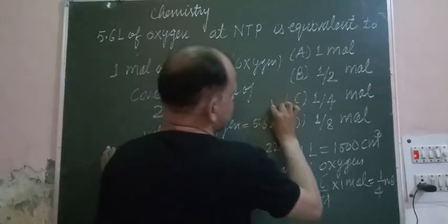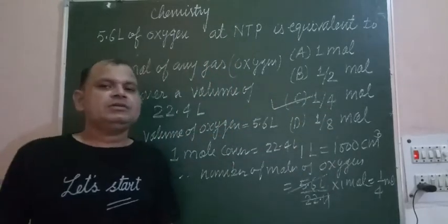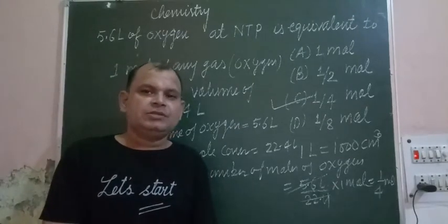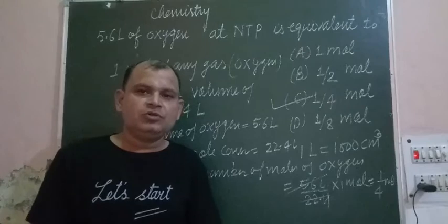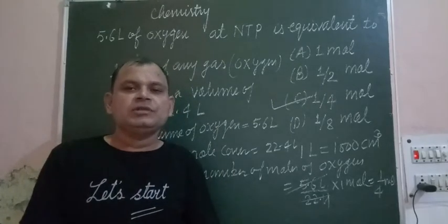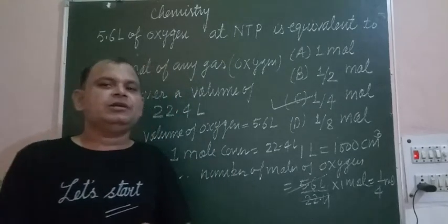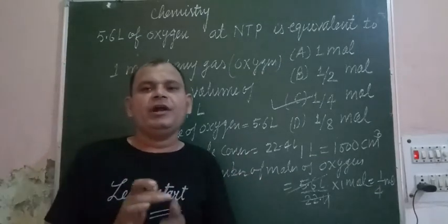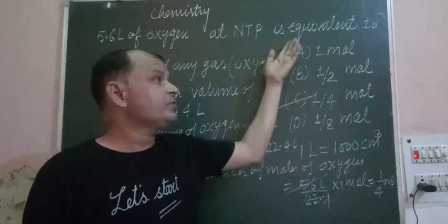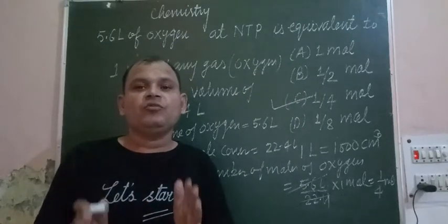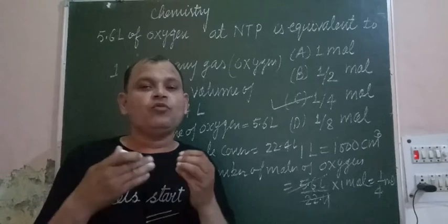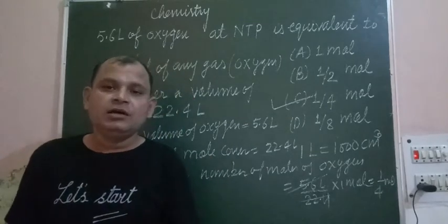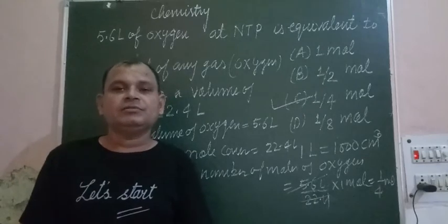So this is the answer: 1.4 moles of oxygen, where one mole contains 6.0 × 10²³ molecules, atoms, or ions. I hope you got it. Thanks for watching.